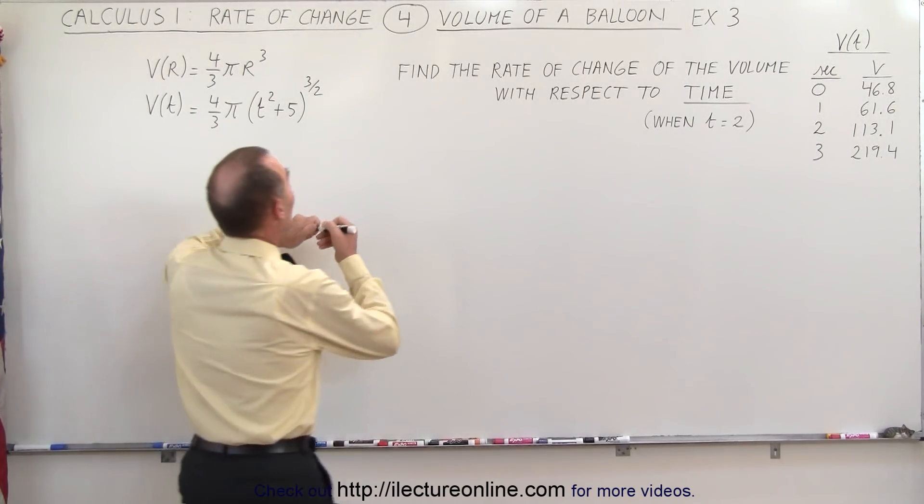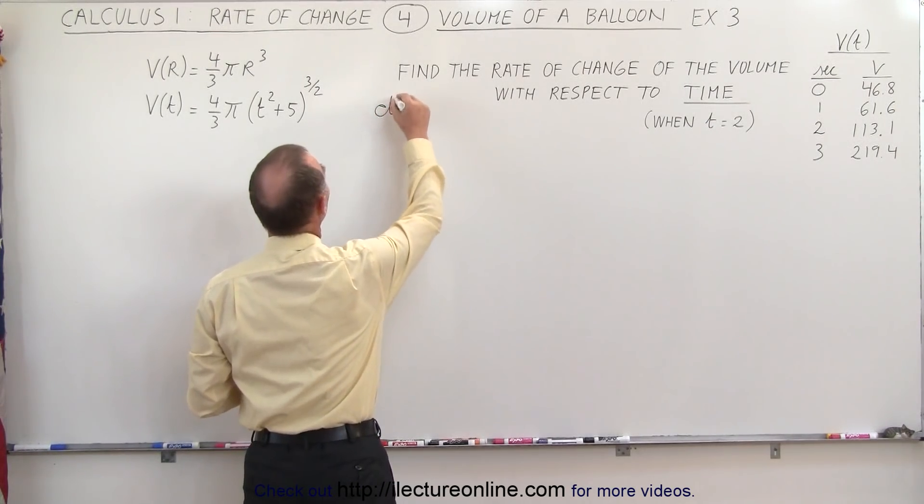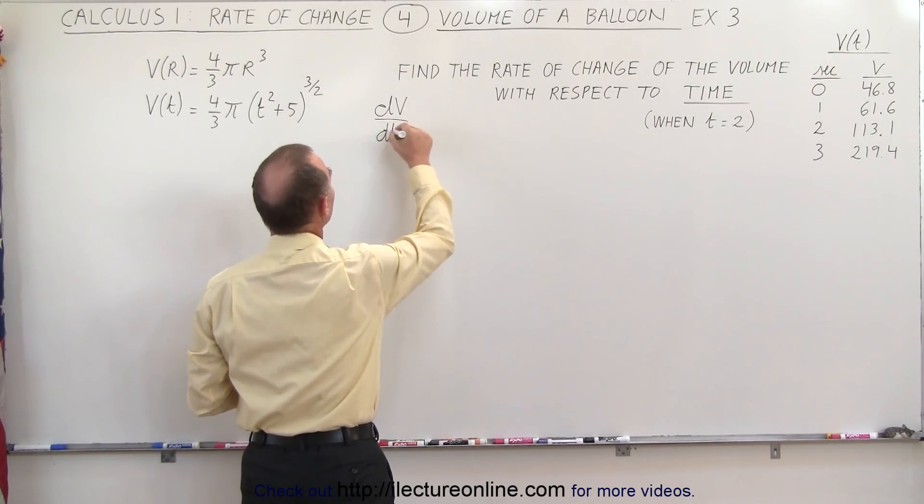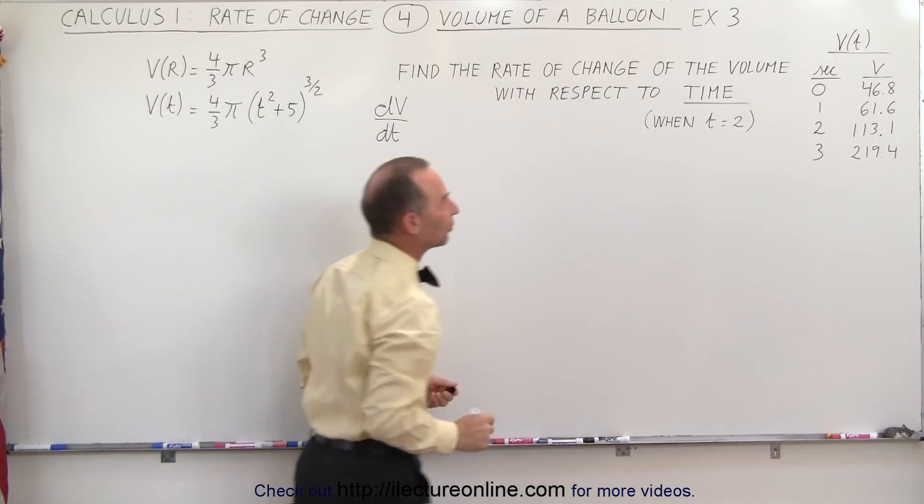In other words, what we're trying to do here is find dv/dt, and we want to do so when time is equal to 2.